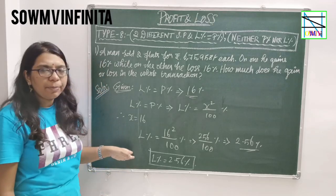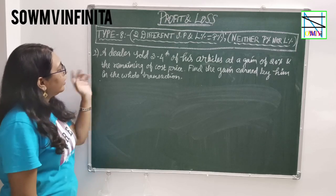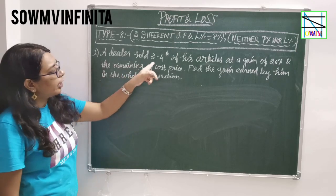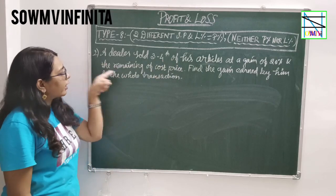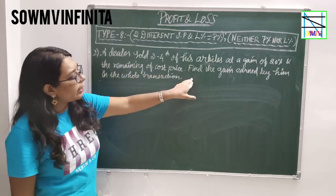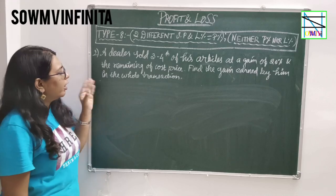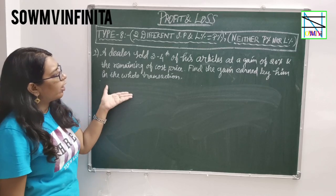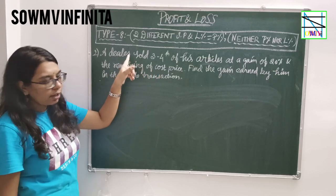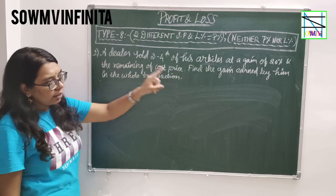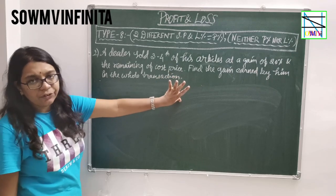Now the second problem: a dealer sold 3/4 of his articles at a gain of 24% and the remaining at cost price. Find the gain earned by the firm in the whole transaction. The given conditions are: first find the cost price, then find the selling price value, then find the gain percent.